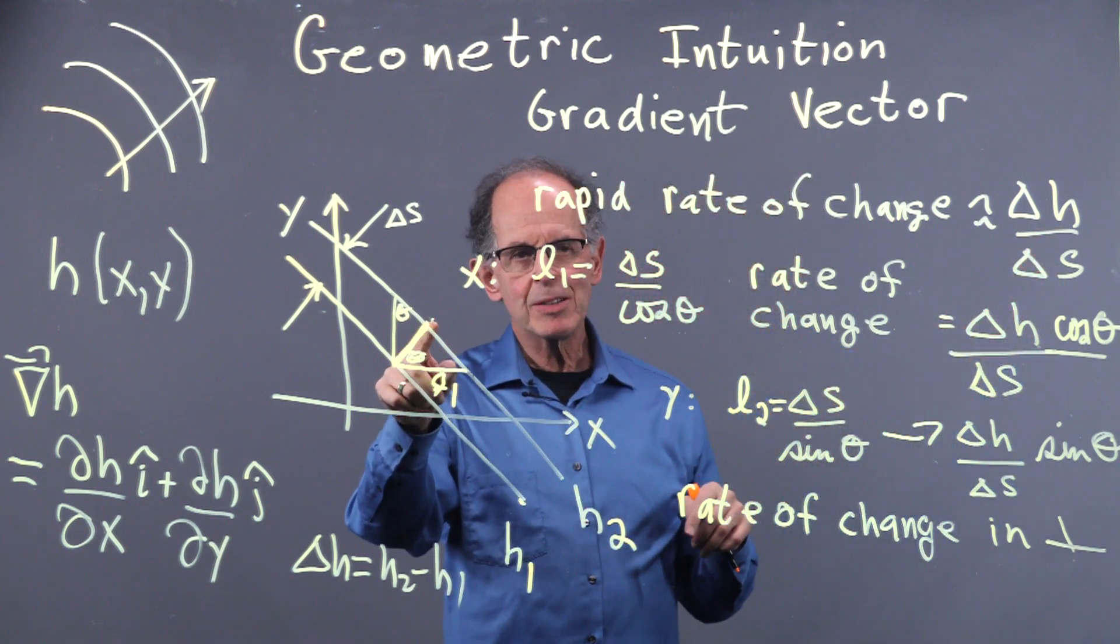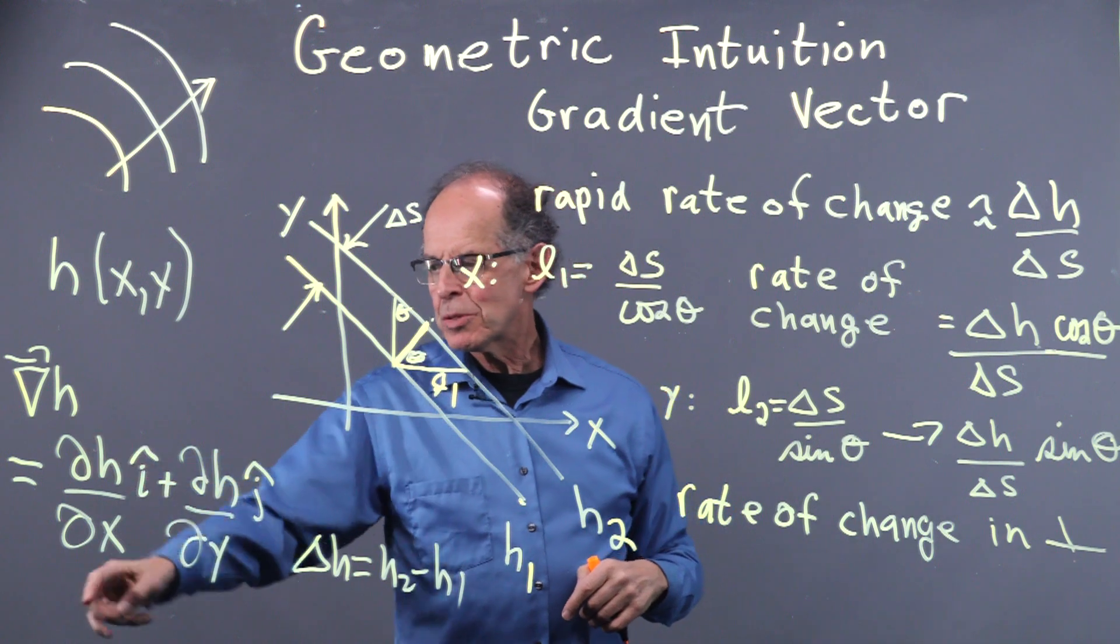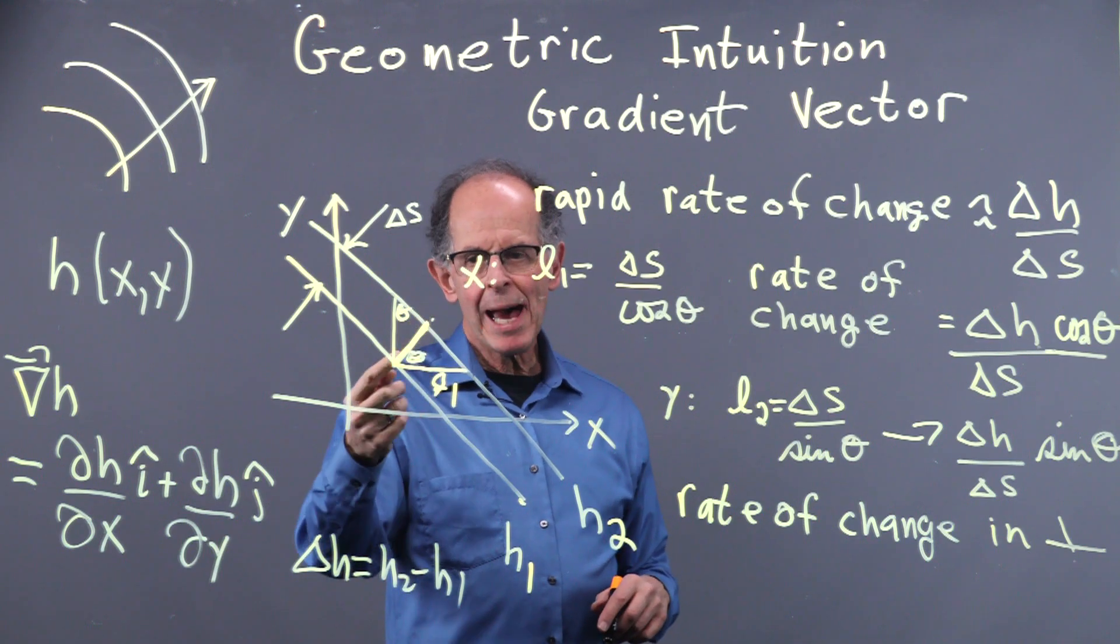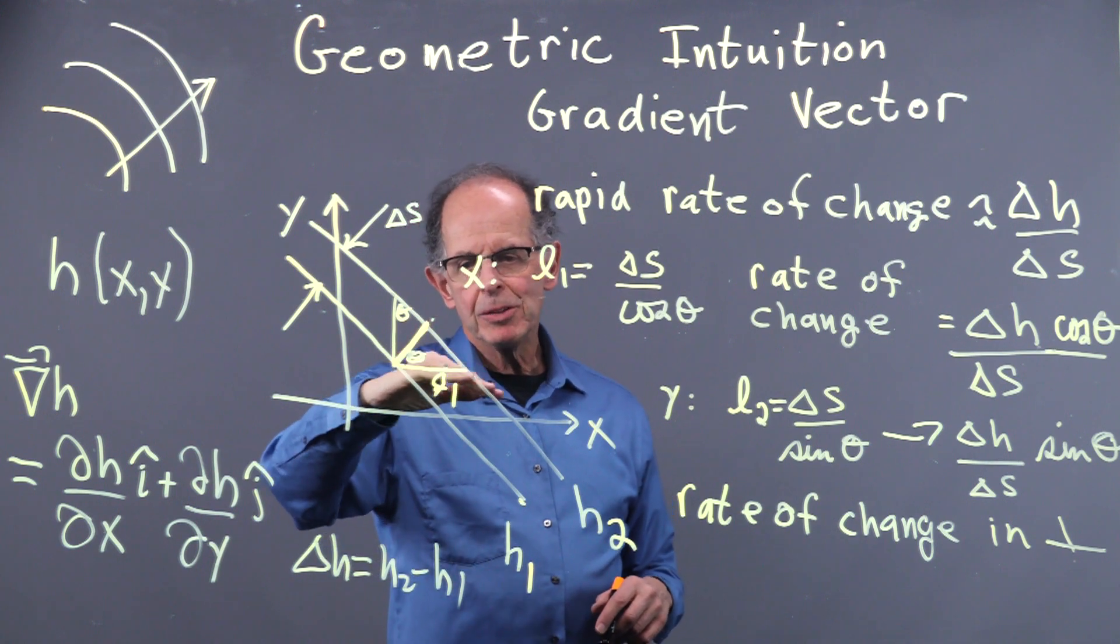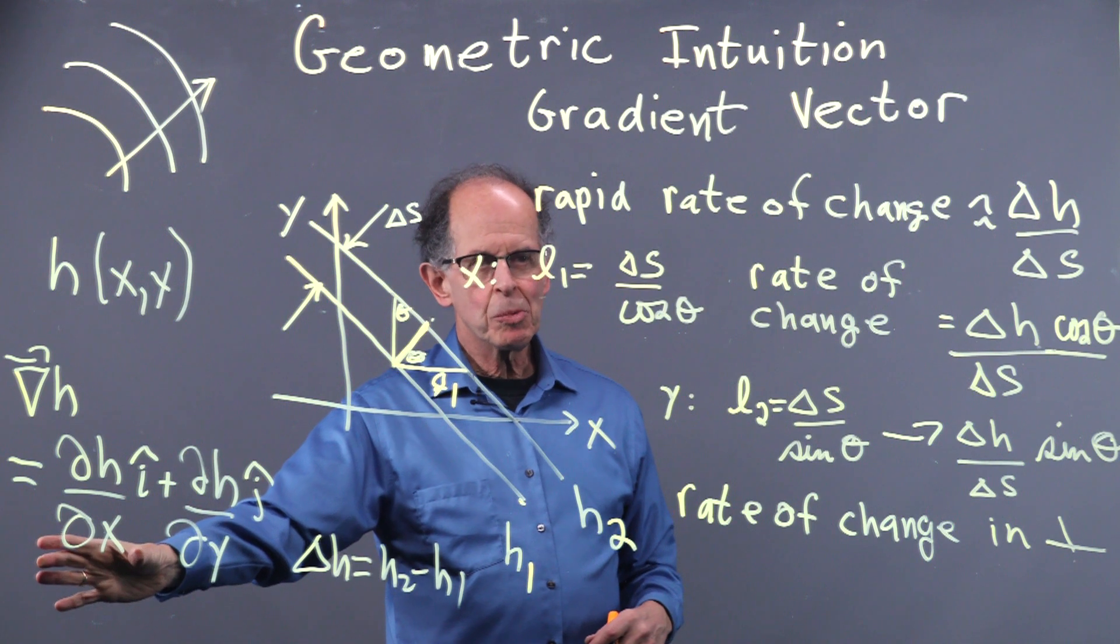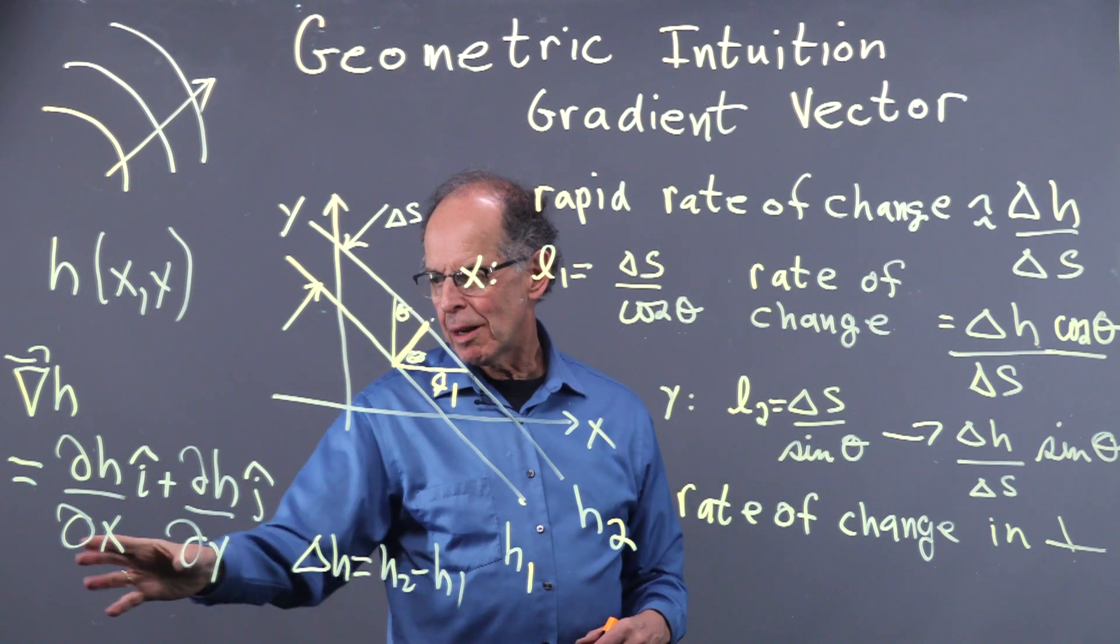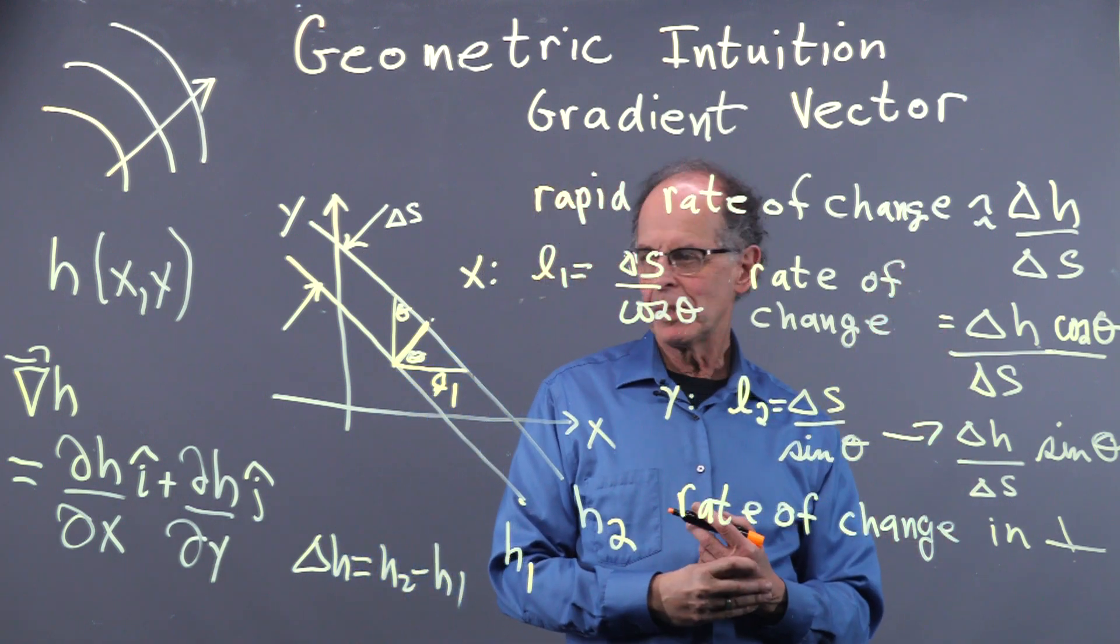So that shows, in fact, that these terms, dH by dx and dH by dy, are the projections of the rate of change in the maximum way, so that's this angle here, onto the x and the y axis. And that underscores what the books say, is that the gradient vector magnitude gives us the greatest rate of change, and we now have seen it geometrically by doing this simple analysis.